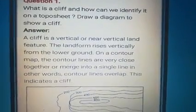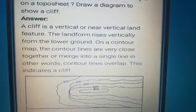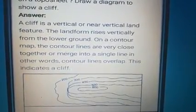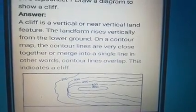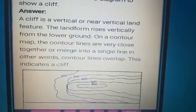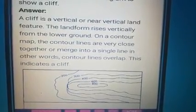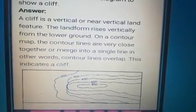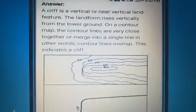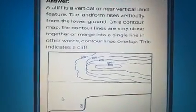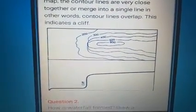These long answers also you want to write in your copy. First question: What is a cliff and how can we identify it on a topo sheet? You also want to draw the diagram showing the cliff. A cliff is a vertical or near-vertical land feature, and the landform rises vertically from the lower ground. On a contour map, the contour lines are very close together or merge into a single line — in other words, contour lines overlap. This indicates a cliff. One side, the sea or ocean is there; from the sea or ocean, the rocky region with steep slopes is there, and this feature is known as a cliff. Both sides you want to draw.